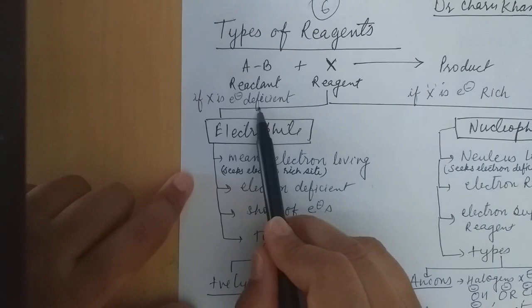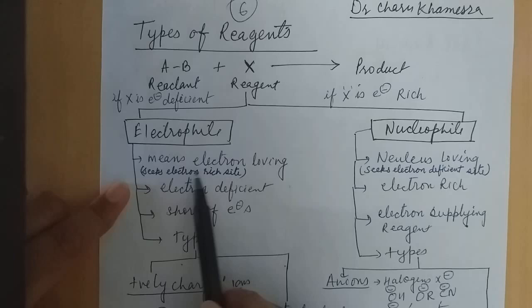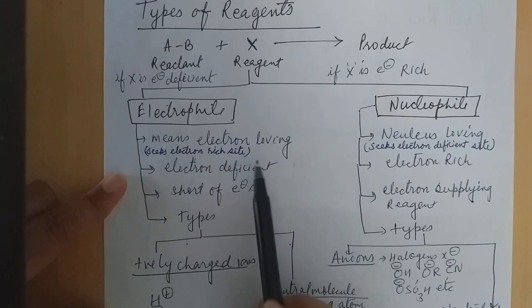If the reagent is electron deficient, it is called an electrophile. If it is electron rich, it is called a nucleophile. This is about electrophile and nucleophile.